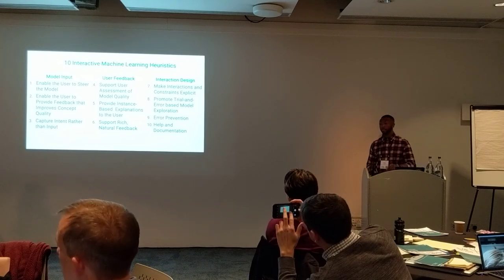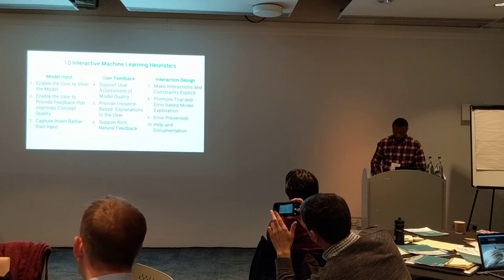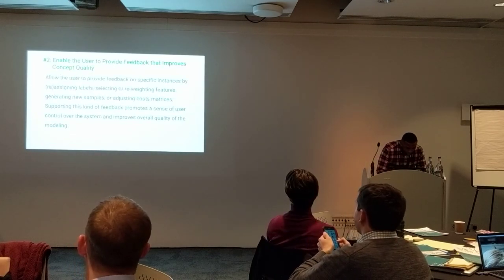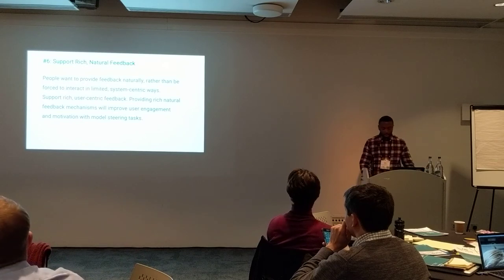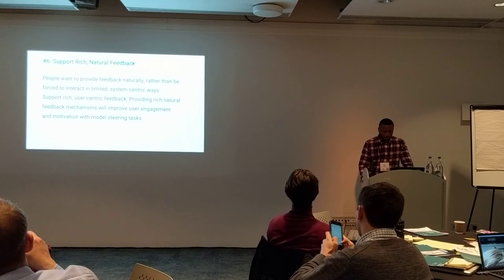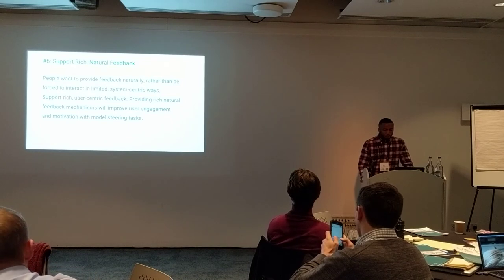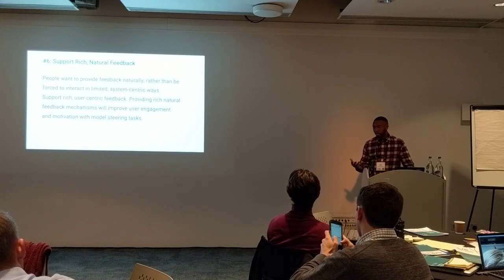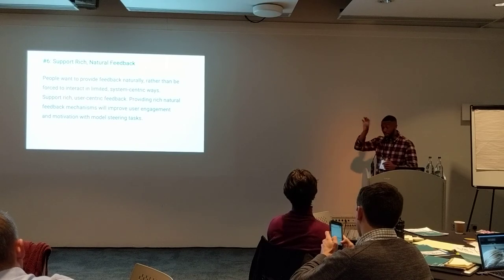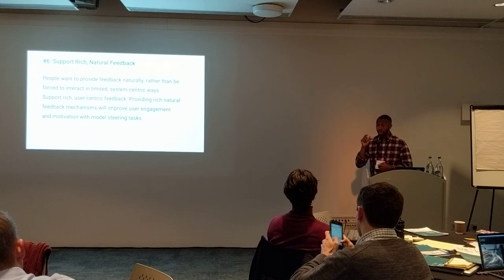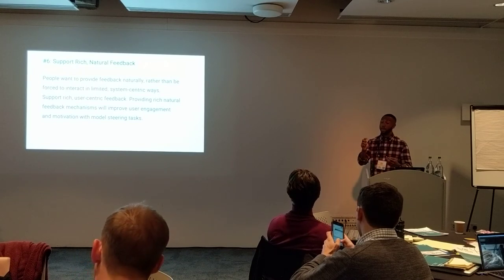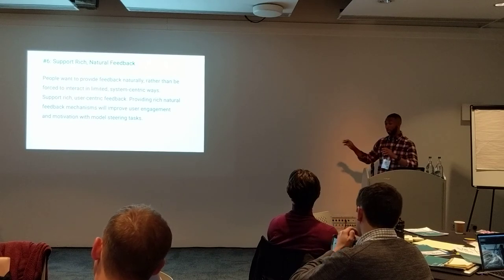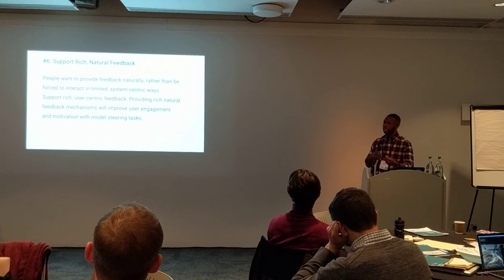Question: Could you tell us a little bit more about number six and number seven? So heuristic six — a rich user-centric feedback example for SharkStore would be: if the user created the three groups and then takes an image out of one group, the model should refresh and consider that image as not part of that group. But if it's also not part of another group, maybe at that point the image is removed from the corpus entirely. That's the kind of interaction being described.